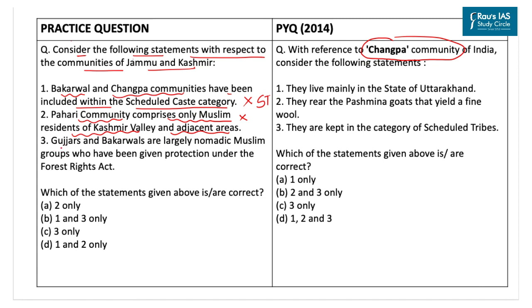The third statement says Gujjars and Bakarwals are largely nomadic Muslim groups who have been given protection under the Forest Rights Act. This statement is correct, as Gujjars and Bakarwals largely live a nomadic life, whereas the Pahari community is relatively well off and lives between the Jhelum and Chenab rivers. As only the third statement is correct, the correct code is option C. The previous year question answer is option B.